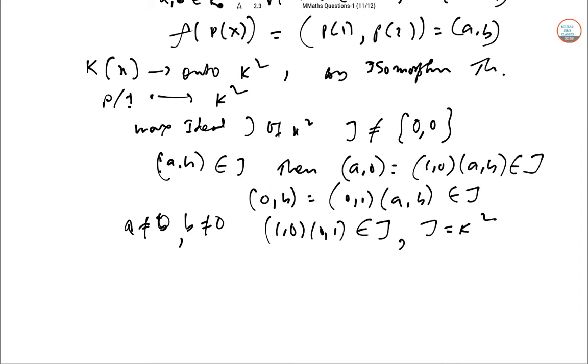If a≠0 and b≠0, then (1,0), (0,1)∈J and J=K². So J is not a maximal ideal. Either J=0×K or J=K×0.